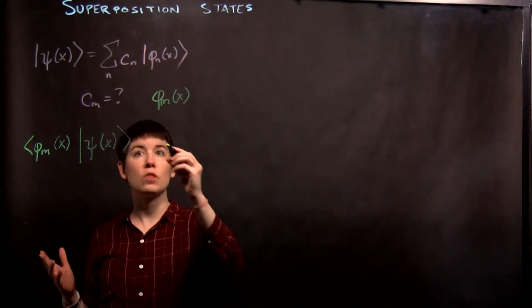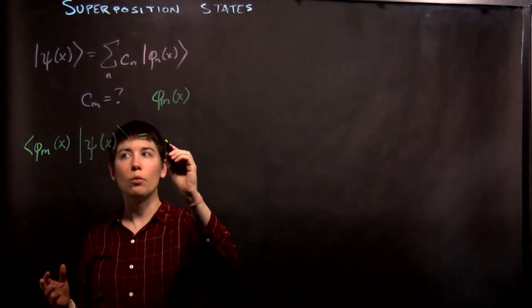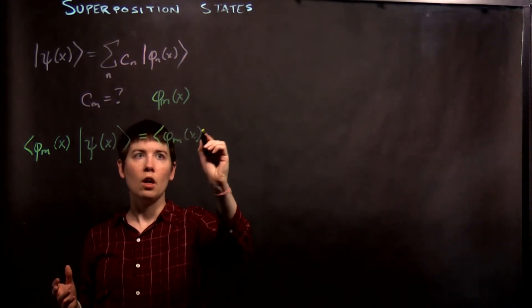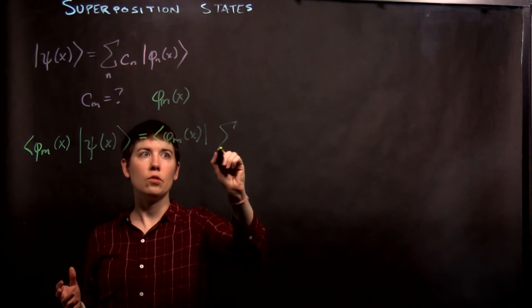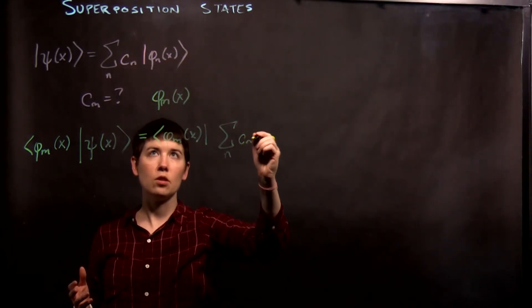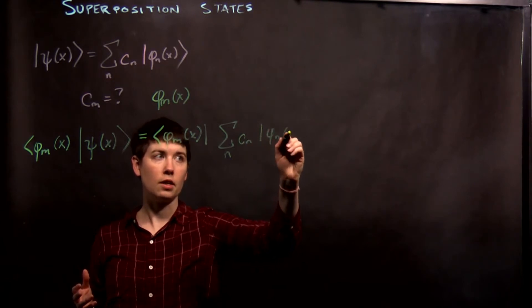When I write it out in terms of the ket notation, what that would look like is here, phi m of x, and then I have that summation over n, c sub m, and then phi n x.